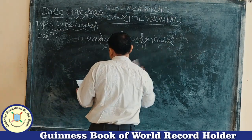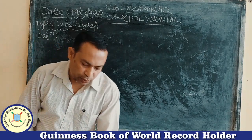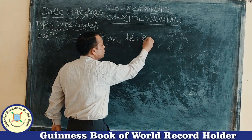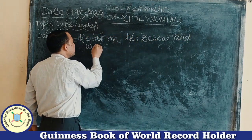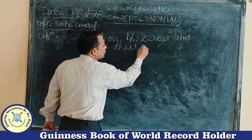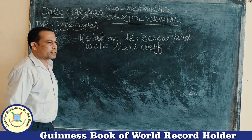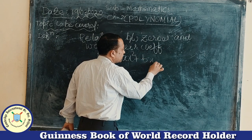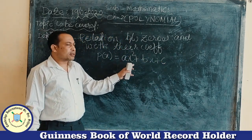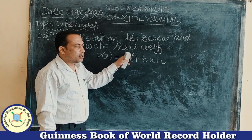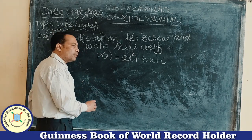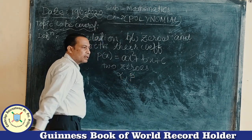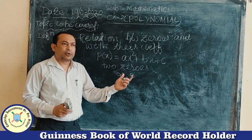Next topic: the relation between zeros and their coefficients. Let P(x) = ax² + bx + c, which is a quadratic polynomial. It is called a quadratic polynomial because the highest power of x is 2. When this polynomial is solved, we get two zeros — alpha and beta. Let us see the relation between these zeros and their coefficients.